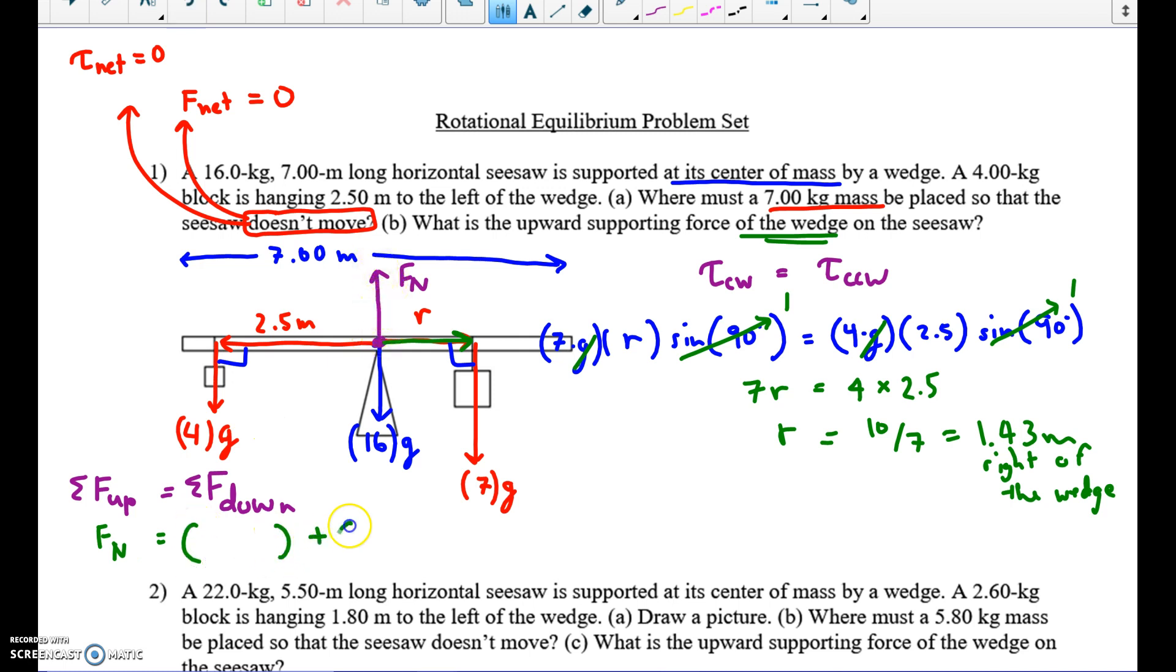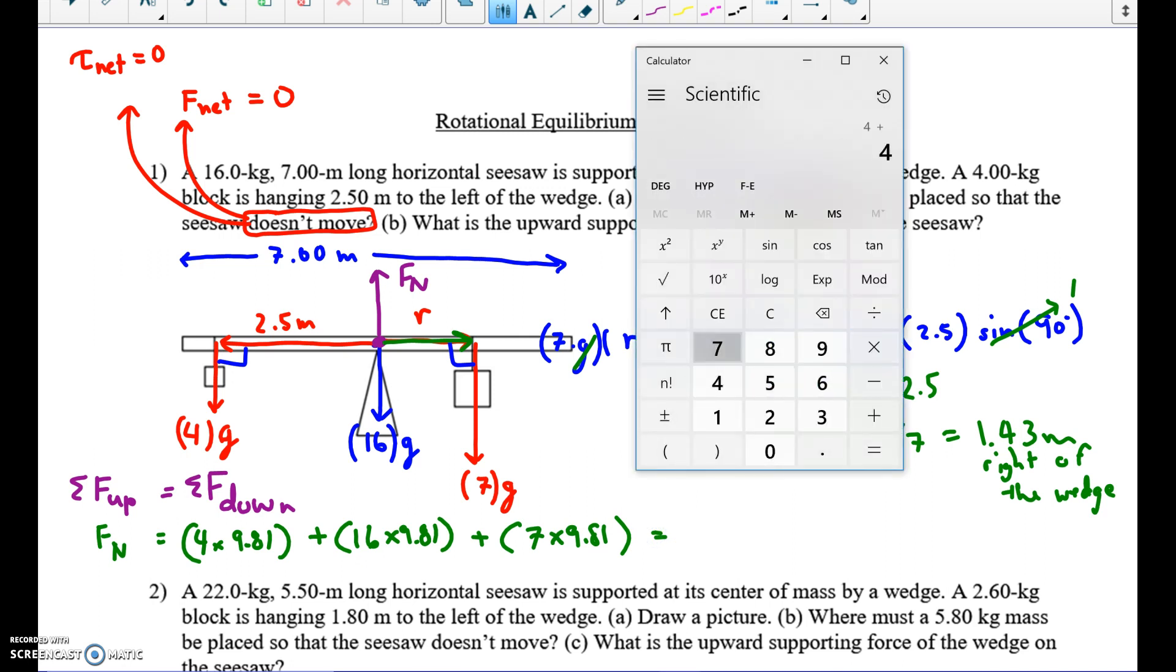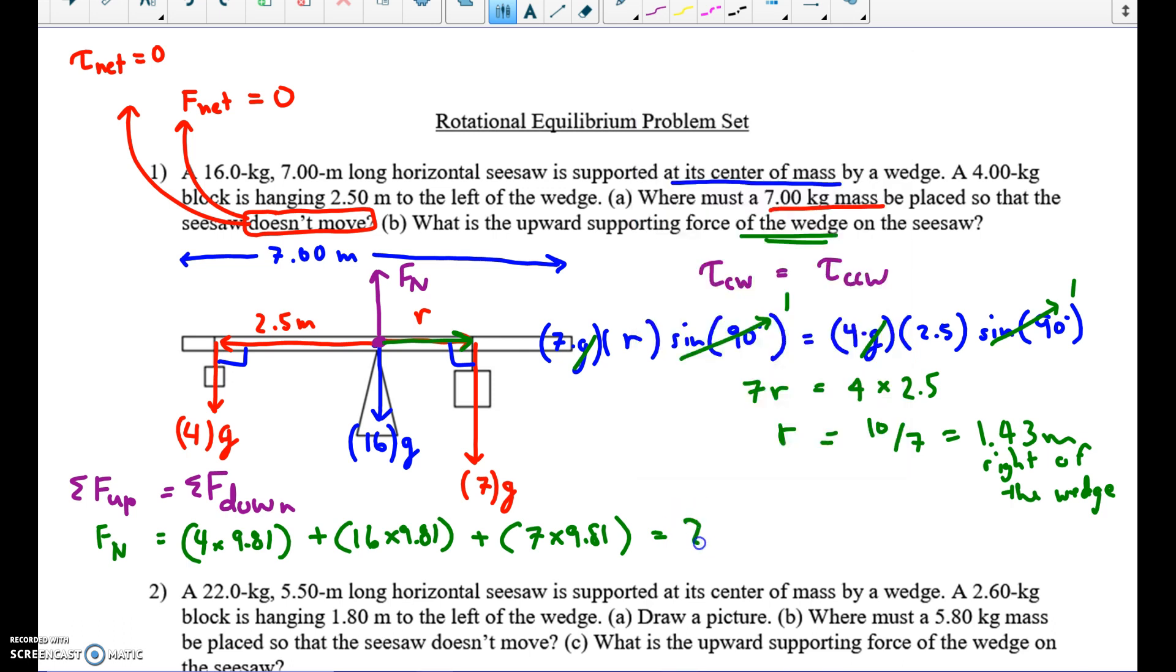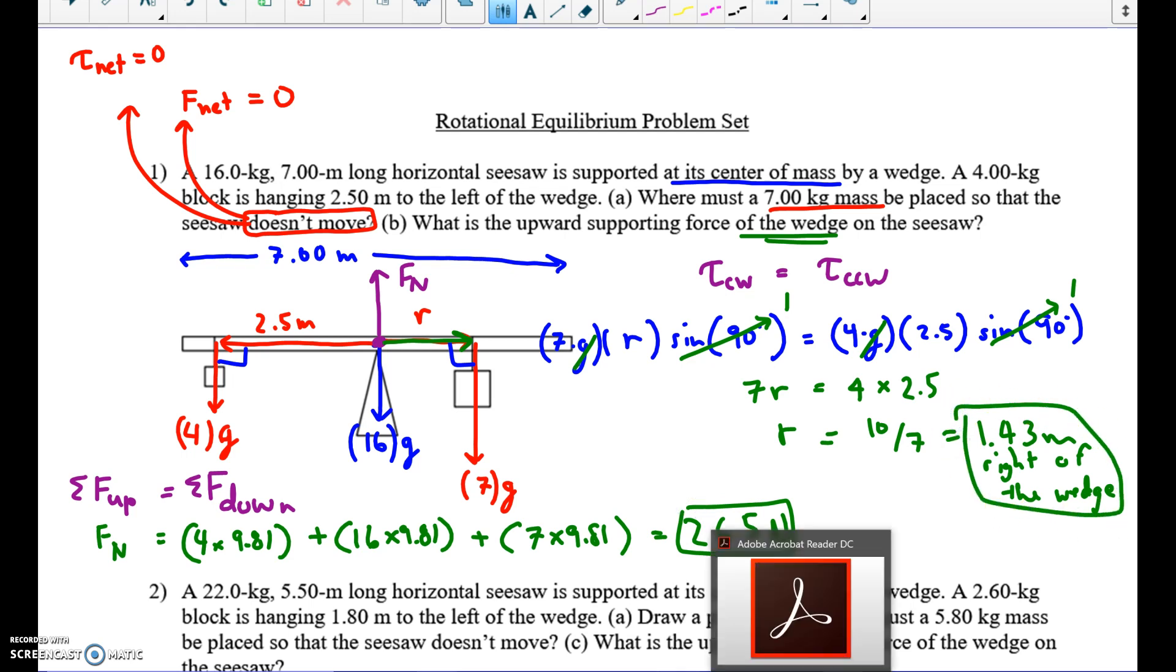There are three forces pointing down. The first is 4 times 9.81. The second is 16 times 9.81. And the third is 7 times 9.81. So we calculate this all together, 4 plus 7 plus 16. I'm going to factor out the 9.81 and multiply last. And I get 265 Newtons. That's how we solve.